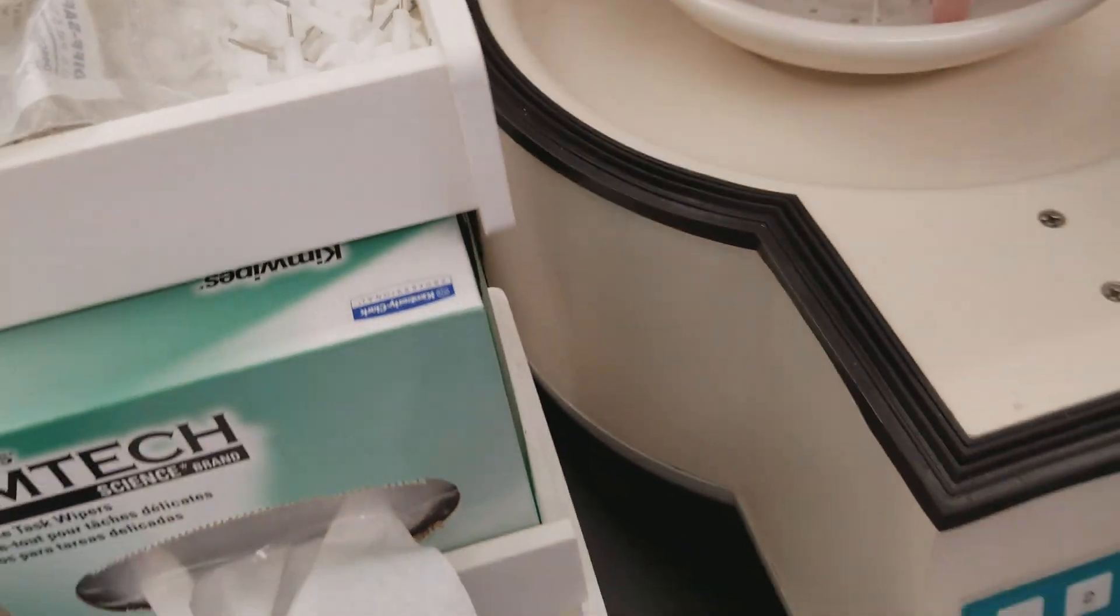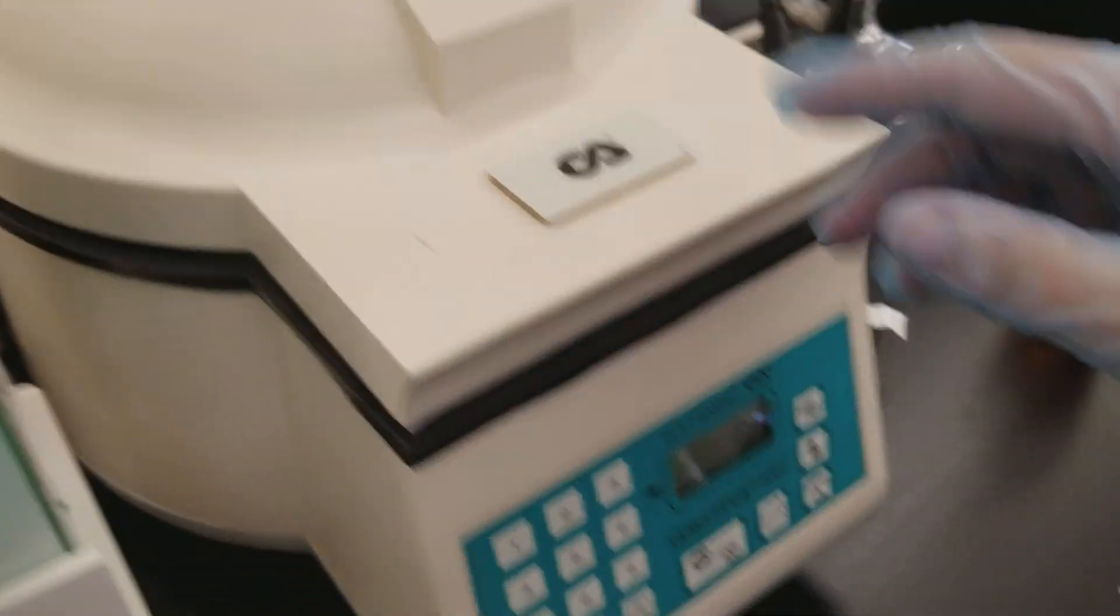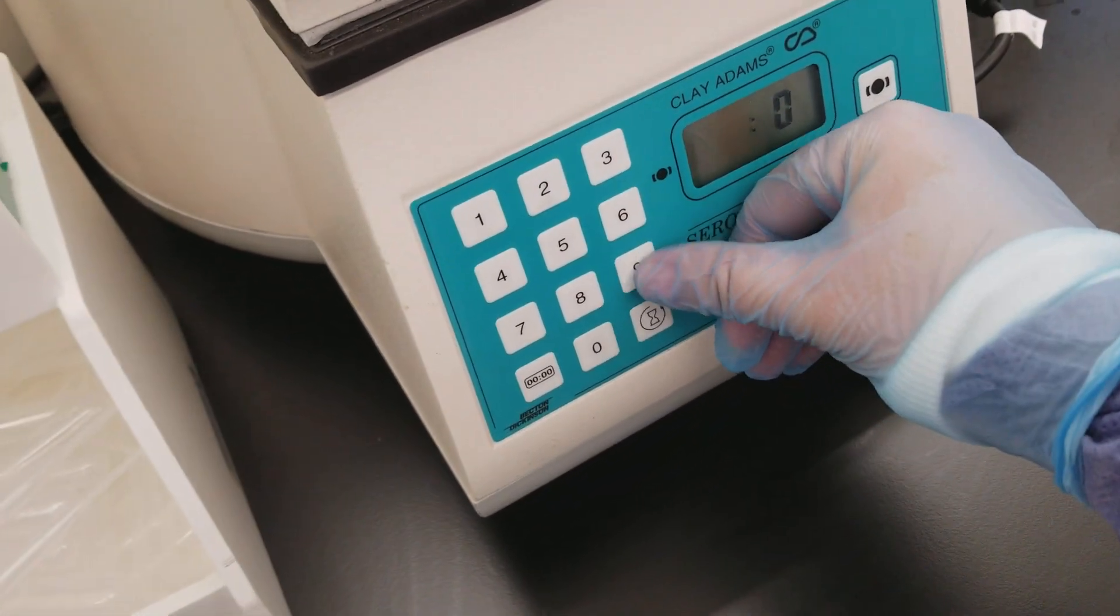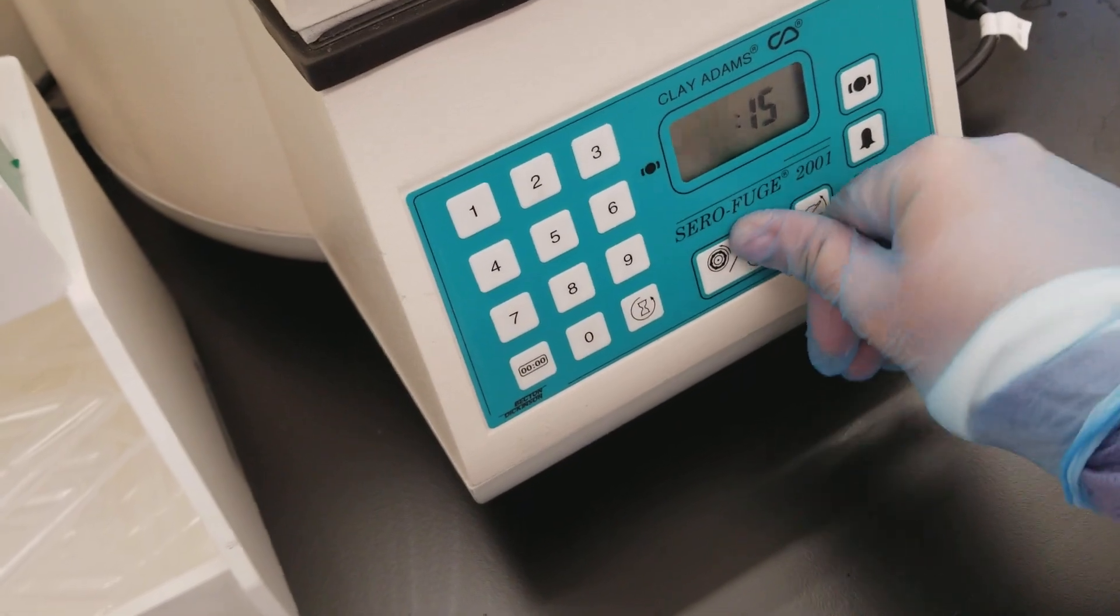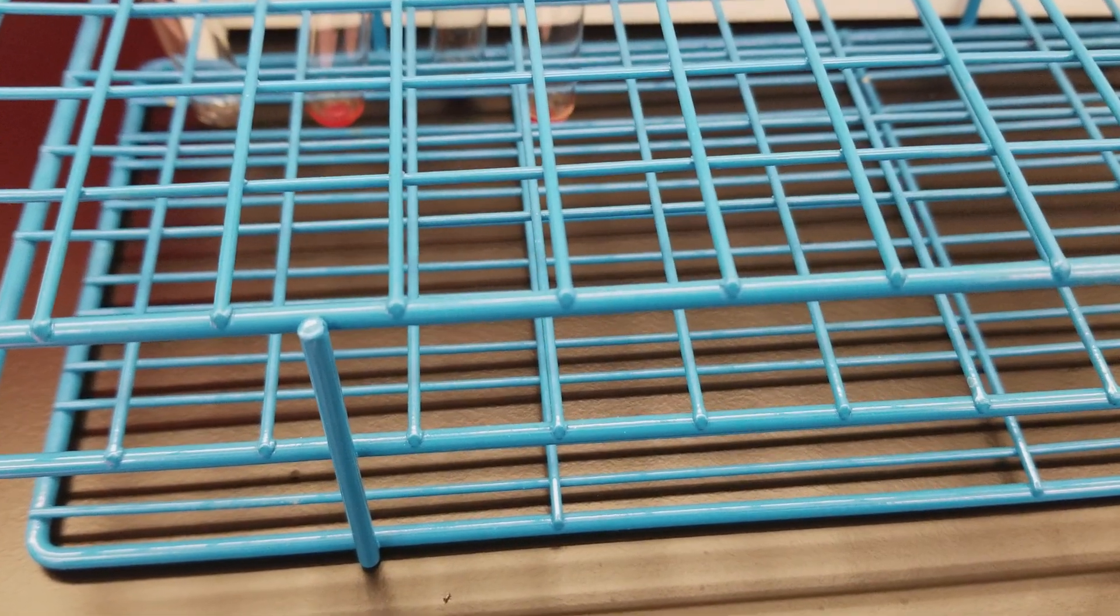So I have all of the tubes in there. I'm going to do the 15 seconds. So I'll do my three washes, dump them out in between each one and then decant all the way on the third wash. Then we'll move on to the next step.